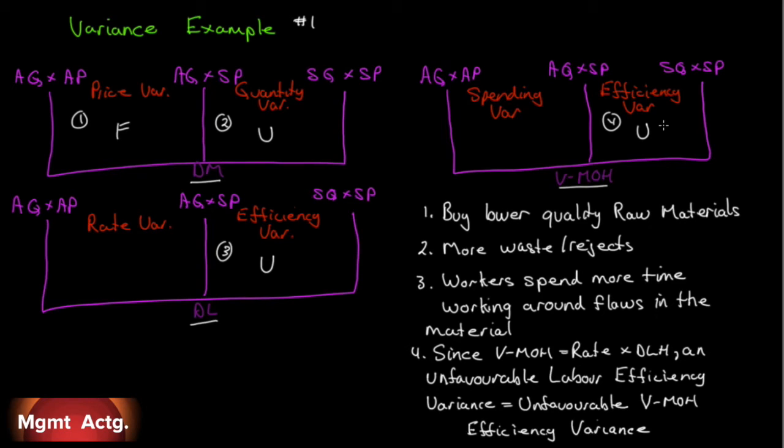Since variable manufacturing overhead is composed of some variable rate times your direct labor hours, an unfavorable labor efficiency variance equals an unfavorable variable manufacturing overhead efficiency variance. Number four, unfavorable. We're still not done. There is another possible problem here. If, in fact, our variable manufacturing overhead does vary with labor hours, more labor hours will mean more spending. Not just a bad efficiency variance, but also more spending. So we spend more hours doing what we have to do for the same output. Chances are you're also going to get an unfavorable spending variance.